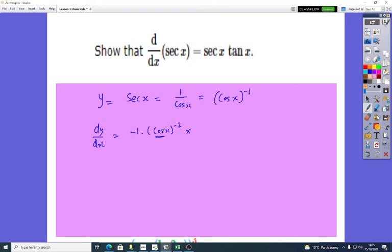What's the differential of cos? Minus sine x. Two negatives become positive, and you end up with sine x over cos squared x.